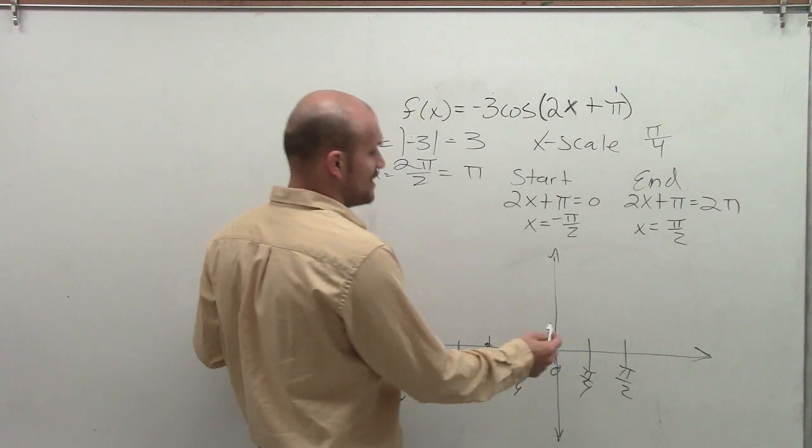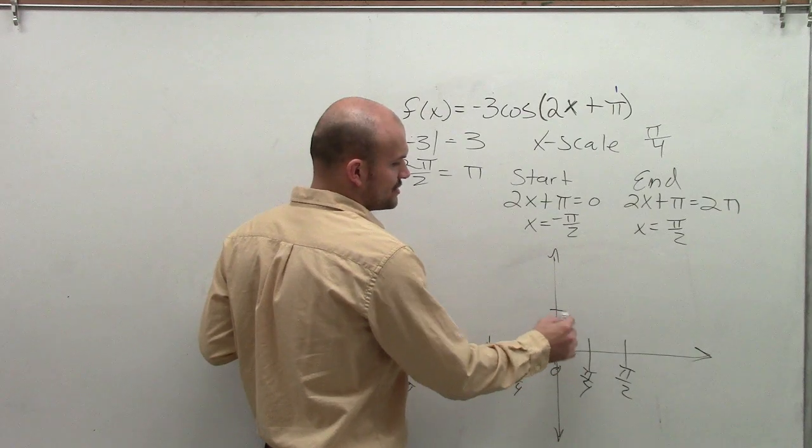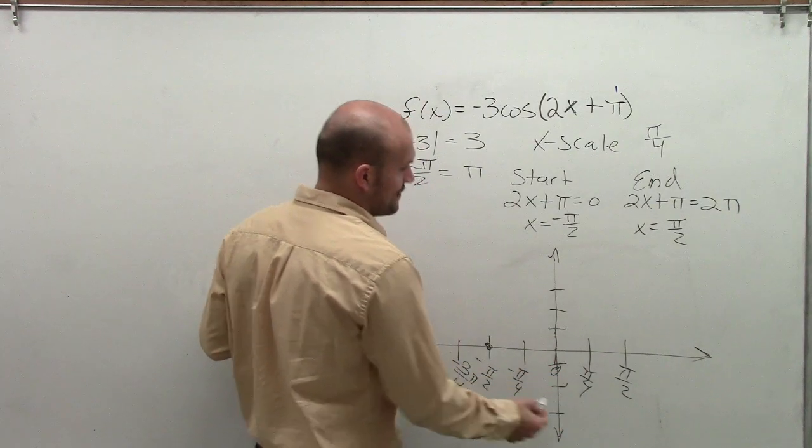So that means the highest my graph is going to go up, well, since there's no vertical transformations, you can say 1, 2, 3. It's the highest it's going to go up is 3, and the lowest it's going to go down is 3.